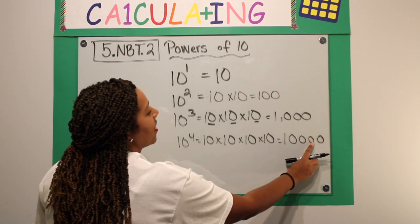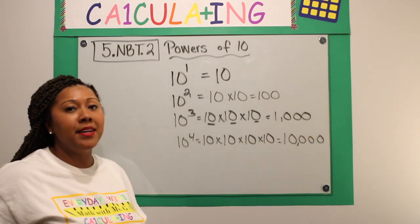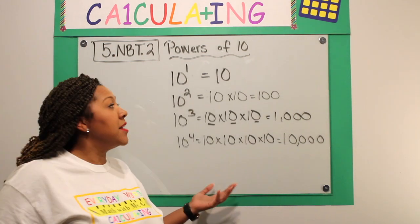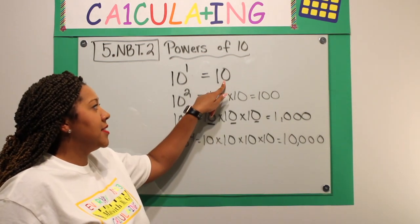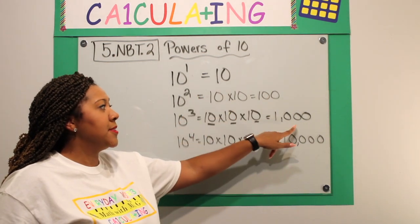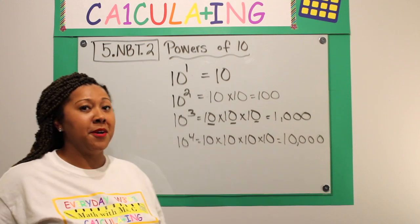Don't forget, after every three digits, you need a comma. Already from this, we see that we have one zero, two zeros, three zeros, and four zeros.